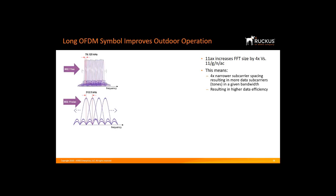So we go from 312.5 kHz to 78.125 kHz per subcarrier. This gives us a frequency domain efficiency and capacity increase, as it provides four times more tones or subcarriers to allocate to multiple users. However, it comes at a price, since the narrower subcarrier spacing is more sensitive to frequency offsets, phase noise, and sampling clock offsets.